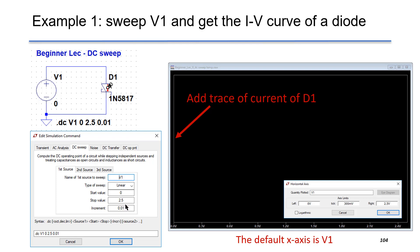So if you run the simulation, you have a plot that pops up. The horizontal axis is for V1.